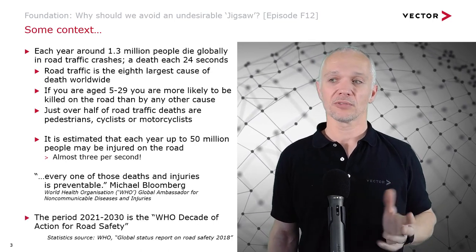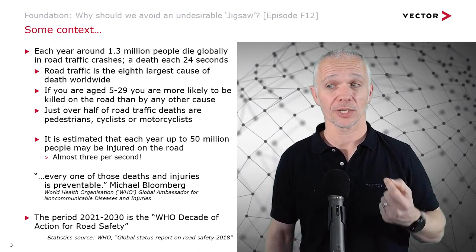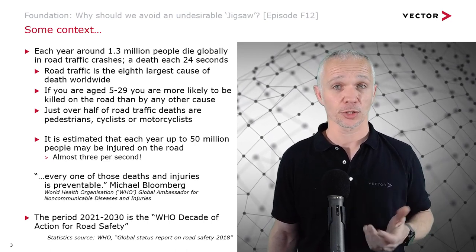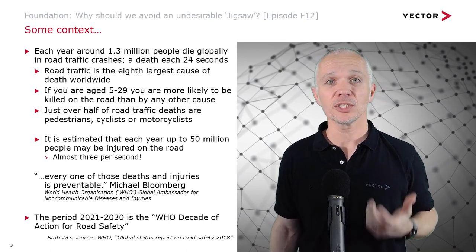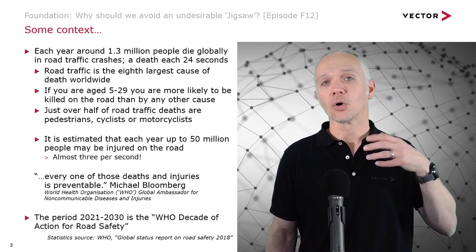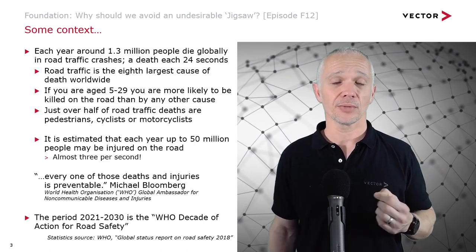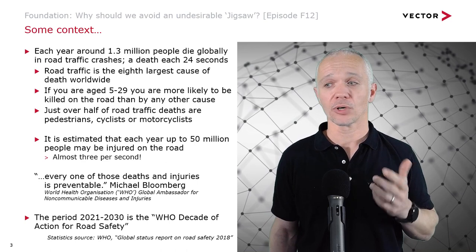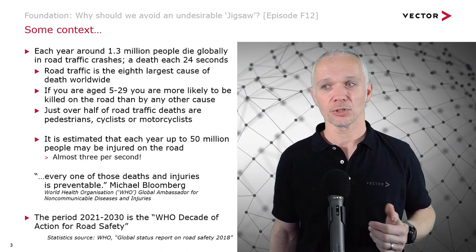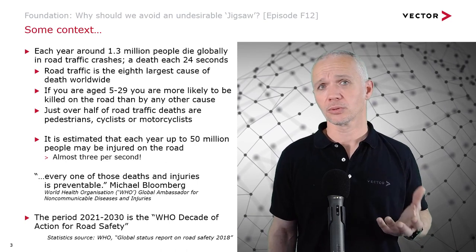Every single one of these deaths and injuries is preventable. We have a quote here from Michael Bloomberg, the WHO Global Ambassador for Non-Communicable Diseases and Injuries. The period 2021 to 2030 has been designated the WHO Decade of Action for Road Safety. All the statistics are taken from the WHO global status report on road traffic safety from 2018, which you can find on the internet.